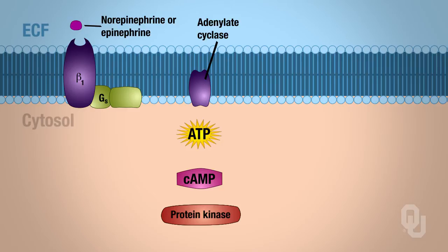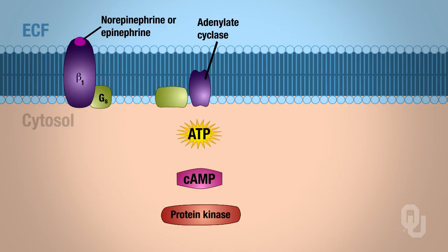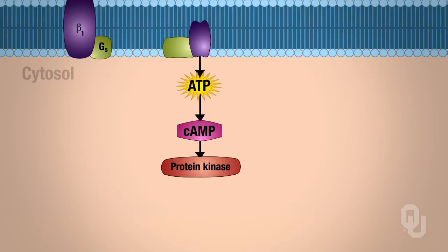Epinephrine or norepinephrine bind to the beta-1 adrenergic receptor, which will activate the amplifier enzyme called adenylate cyclase. Adenylate cyclase catalyzes the conversion of ATP into cyclic AMP, which then activates protein kinase. Protein kinase phosphorylates, and there are four ways in which epinephrine or norepinephrine can increase contractility — all done by protein kinase.